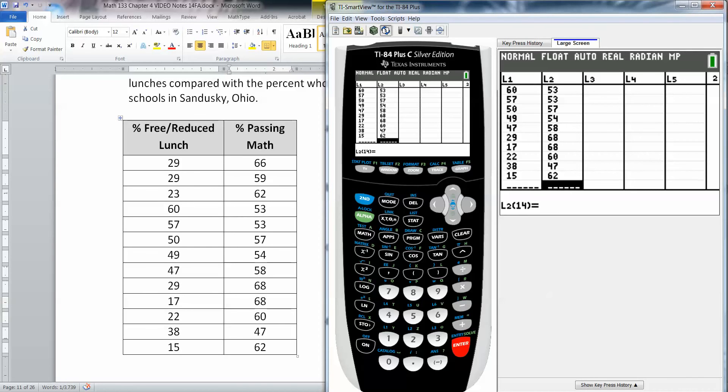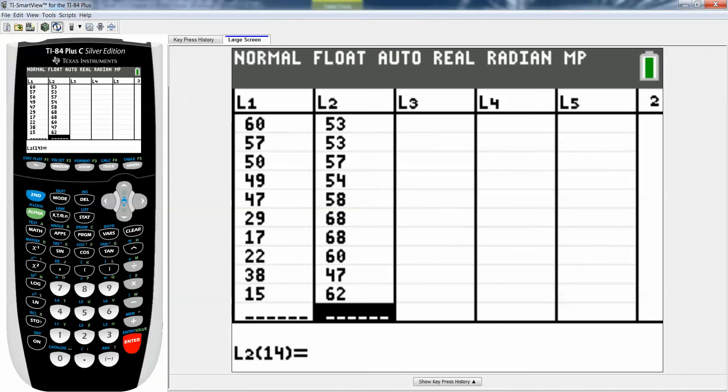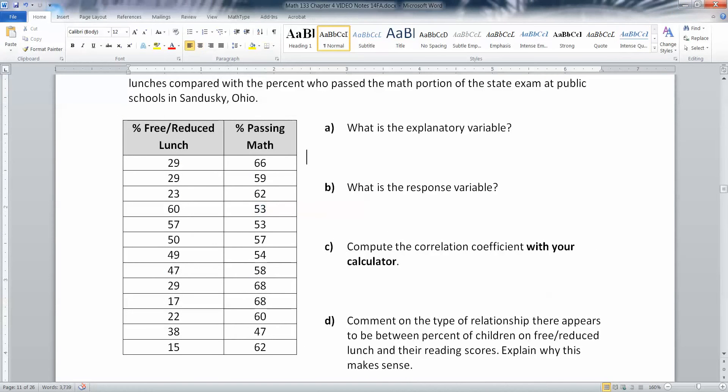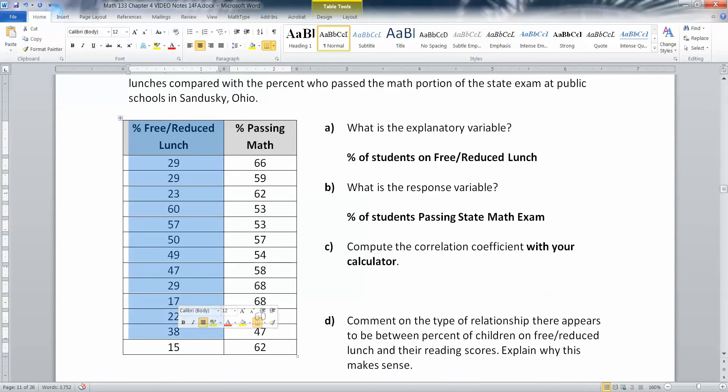They want us to answer what is the explanatory and what's the response variable. The explanatory variable is the percentage of students that are on free reduced lunch, that's your X. The response variable is the percentage of students that passed the state math exam.